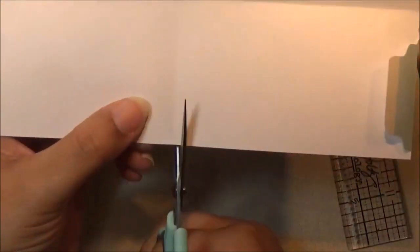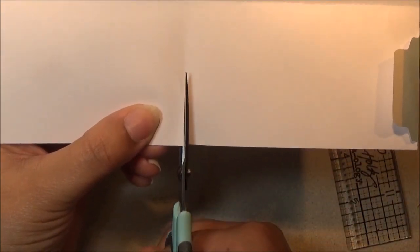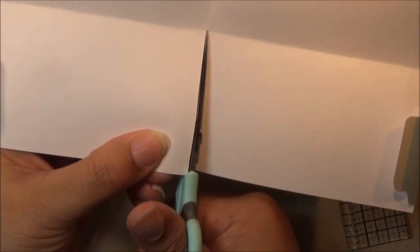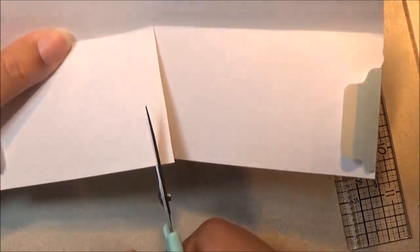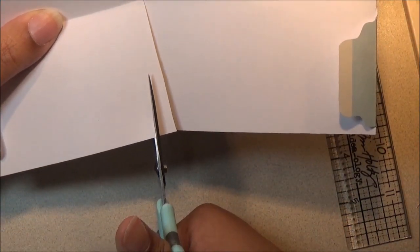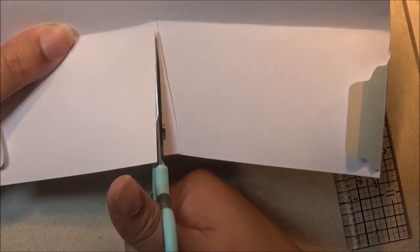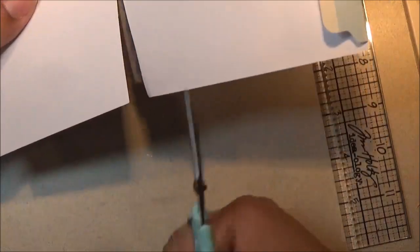Next what you're going to do is unfold that. And we're just going to cut along this line in your creases. And then what you're going to do is cut off a triangle piece. Just like so. Like that.